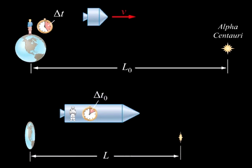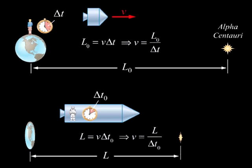For the Earth-based observer, L0 equals v times Delta T, or v equals L0 divided by Delta T. For the observer on the ship, L equals v times Delta T0, or v equals L divided by Delta T0.